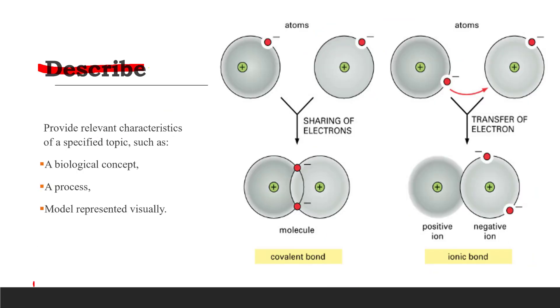Describe. When we describe a concept or a process, what we need to do is to provide relevant characteristics and information of the particular concept. It's like telling a story, so you need a certain degree of details. For example, if we were asked to describe the bond formation process in this picture, we can't just say it is the covalent bond or ionic bond.